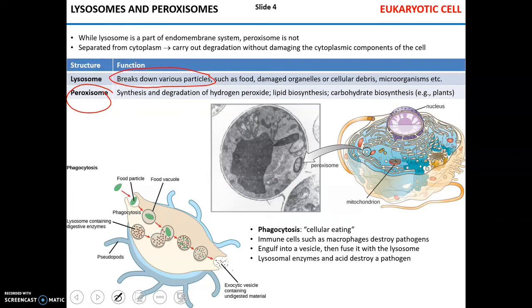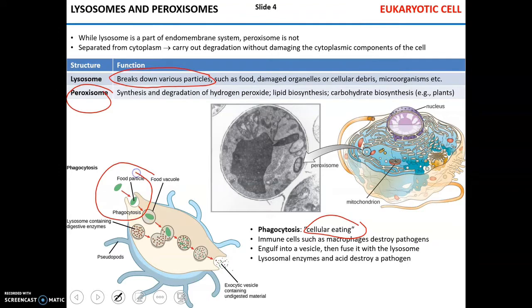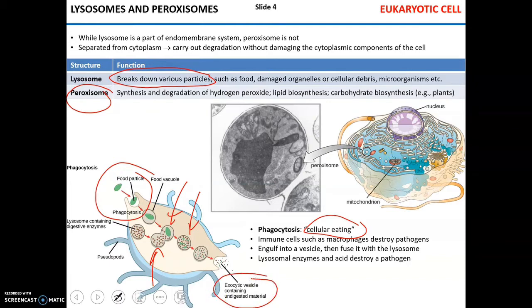Lysosomes participate in the process known as phagocytosis, which translates to cellular eating. Phagocytosis is characteristic of immune system cells such as macrophages and dendritic cells. These cells engulf a pathogen or food particle in a vesicle, which then fuses with a lysosome. Components of the lysosome destroy the acquired food or pathogen, and undigested material is released.